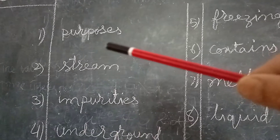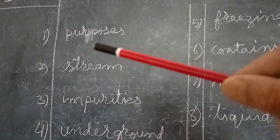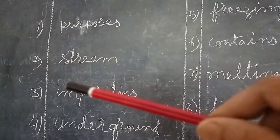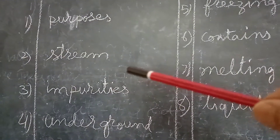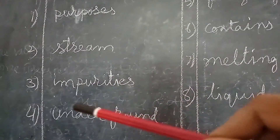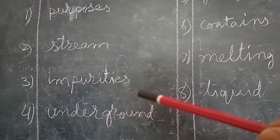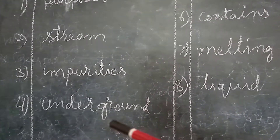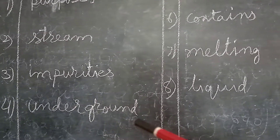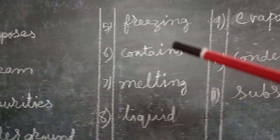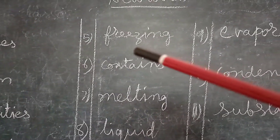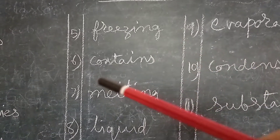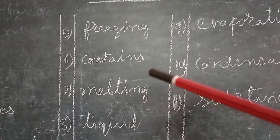This is the first one. Purposes, P-U-R-P-O-S-E-S. Then S-T-R-E-A-M, stream. I-M-P-U-R-I-T-I-E-S, impurities. U-N-D-E-R-G-R-O-U-N-D, underground. Then F-R-E-E-Z-I-N-G, freezing. C-O-N-T-A-I-N-S.